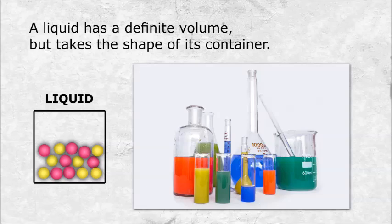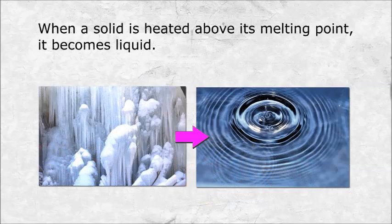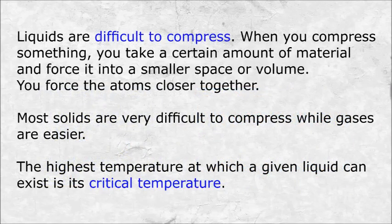A liquid has a definite volume but takes the shape of its container. When a solid is heated above its melting point, it becomes liquid. Liquids are difficult to compress. When you compress something, you take a certain amount of material and force it into a smaller space or volume — you force the atoms closer together. Most solids are very difficult to compress, while gases are easier. The highest temperature at which a given liquid can exist is its critical temperature.